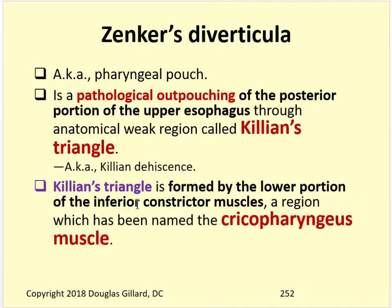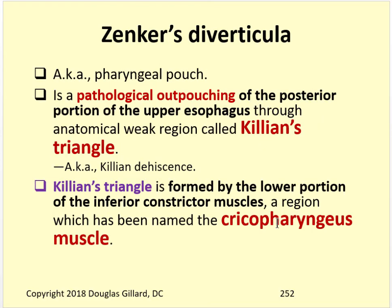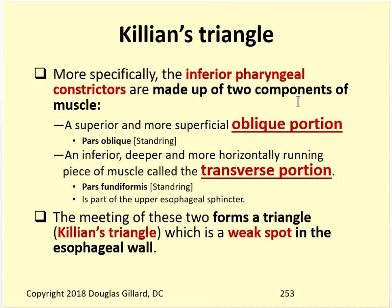Killian's Triangle is formed by the lower portion of the inferior constrictor muscles on the backside of the esophagus. The inferior portion of those esophageal constrictors has been given a special name - the cricopharyngeus muscles, one on each side. Those are broken down even further: the cricopharyngeus, that inferior portion, is split into two components - an oblique portion and a transverse portion.